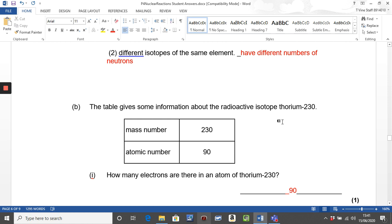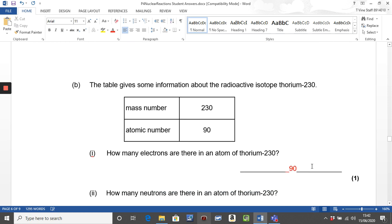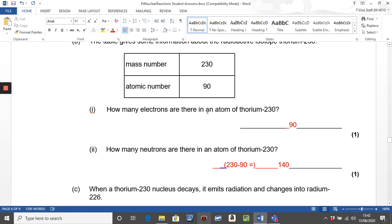This one, just a matter of reminding yourself about atomic structure. If you've got an atomic number of 90, that's how many protons it's got. So it must have the same number of electrons. So that's 90 electrons. When it comes to neutrons, the version is it's mass number, take away atomic number. So we get a lovely answer of 140 there.